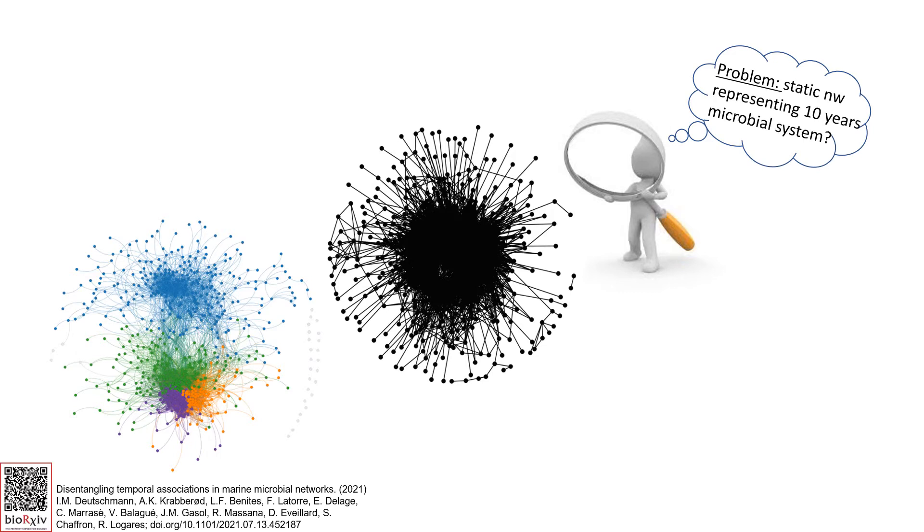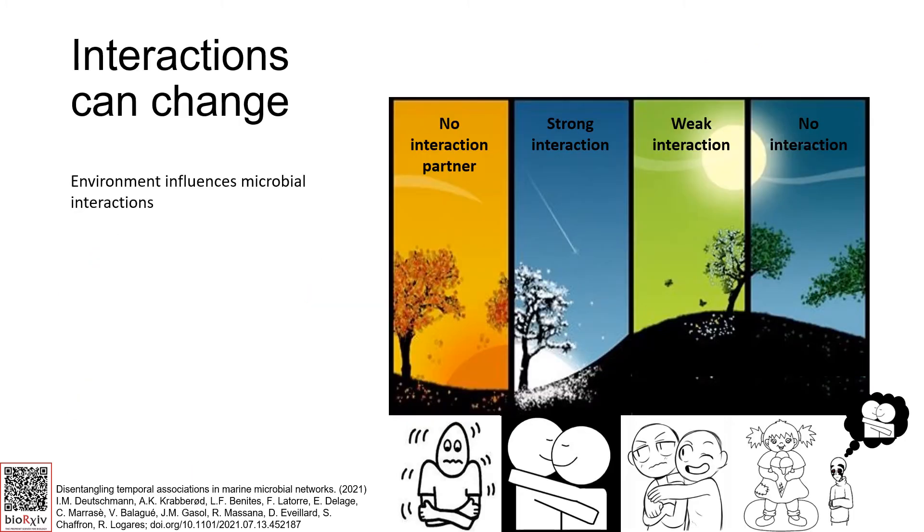What I didn't like was the thought that this one network represents a microbial ecosystem over 10 years. Given two partners, the interaction may be strong, weak or not existing, although both are present. Some might do well without the other partner and some do not. Or they team up with someone new.